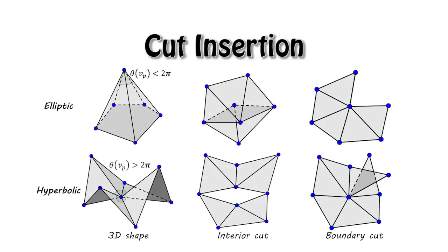As mentioned, there are two kinds of non-flattenable vertices. One has the sum of incident angles smaller than 2π, another one is greater than 2π. They should be treated in a different way. In short, a boundary cut should be applied to an elliptic vertex, but a hyperbolic vertex should have an interior cut.